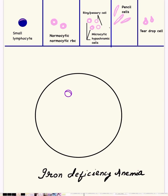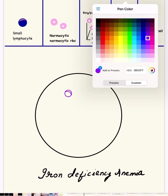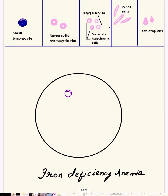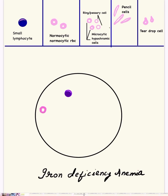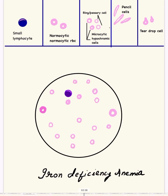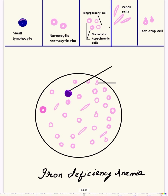We draw the small lymphocyte, color the nuclear chromatin, then add the scanty cytoplasm. After that we make one or a few normocytic RBCs. Then we make the microcytic hypochromic cells, some ring or pessary cells, pencil cells, and teardrop cells, then again some more microcytes.